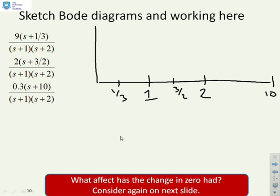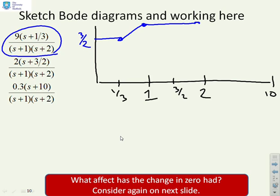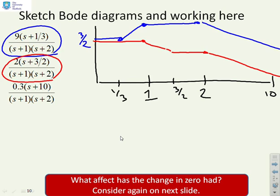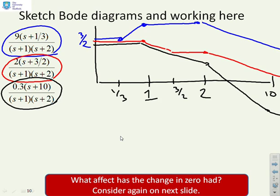For the first case with zero at one-third, the gain starts at 3 over 2, has an upslope at the zero, goes flat at 1, and then down again at 2. For the second case with zero at 3 over 2, after hitting 1 the gain goes down, then flattens, then goes down again — and this gain is significantly less than the first. For the third case with zero at s+10, the gain goes down faster and then comes back, resulting in an even smaller overall gain. There is a clear difference between the gain plots for these three cases.